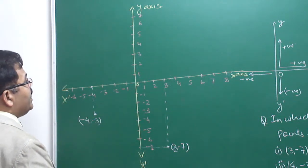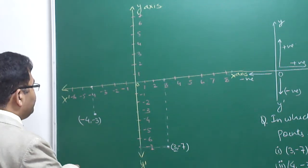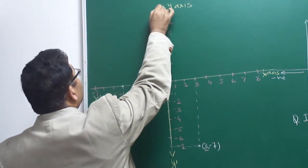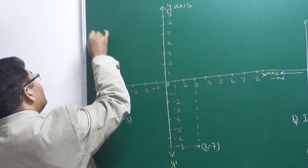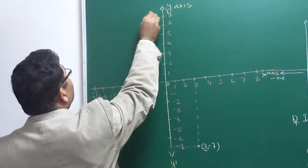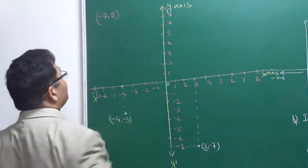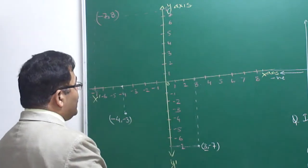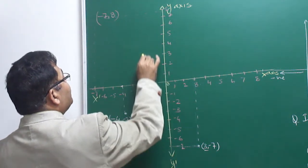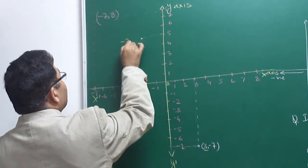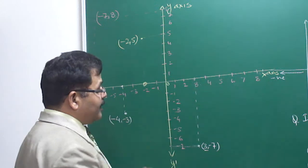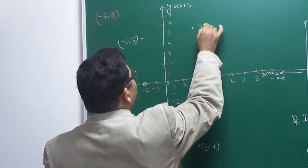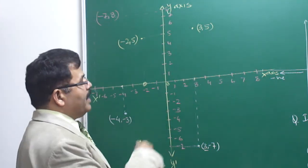For point (−7, 8): X is −7 — that is here beyond −6 — and Y is 8, which is positive. So this point lies in the second quadrant. For point (−2, 5): X is −2 and Y is 5, so this point is here in the second quadrant.